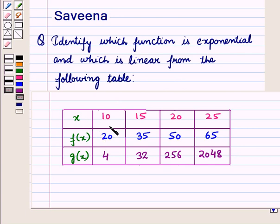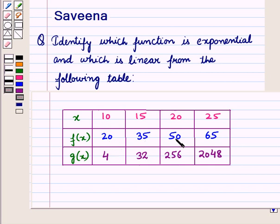In this table the different values of x are given as 10, 15, 20 and 25, and the corresponding values of f(x) are given as 20, 35, 50 and 65.